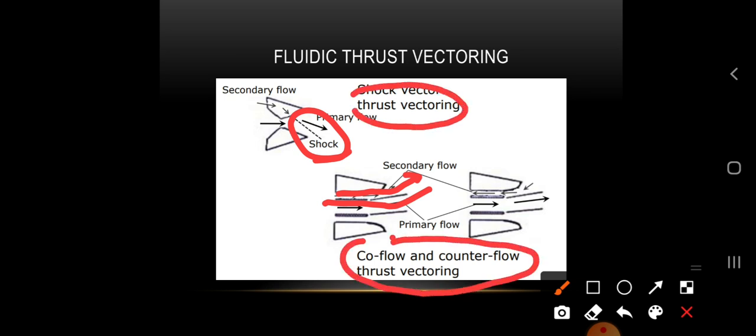This is called shock vectoring thrust vectoring, where we use the formation of shocks to guide the primary and secondary flows.